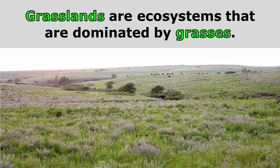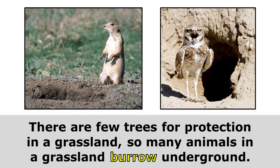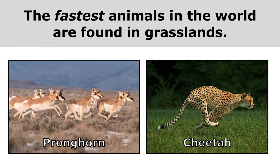Grasslands are ecosystems that are dominated by grasses. There are few trees for protection in a grassland, so many animals in a grassland burrow underground. The fastest animals in the world are found in grasslands.